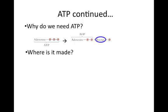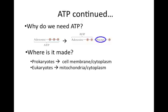ATP is produced in different places in prokaryotes and eukaryotes. Because prokaryotes lack mitochondria, they produce ATP in the cell membrane and the cytoplasm, while in eukaryotes, ATP is produced in the mitochondria and the cytoplasm.